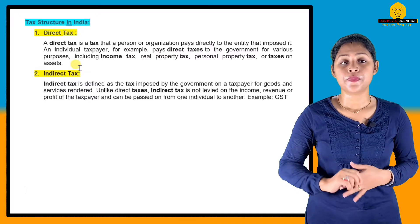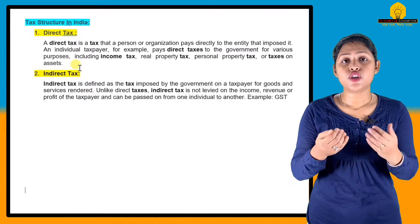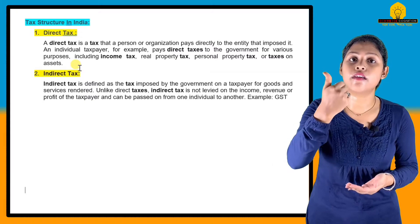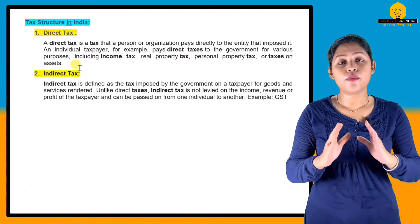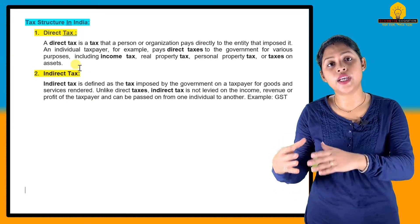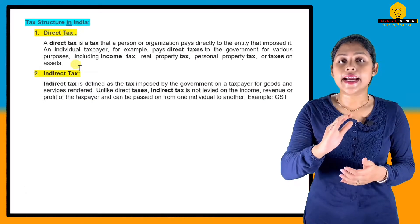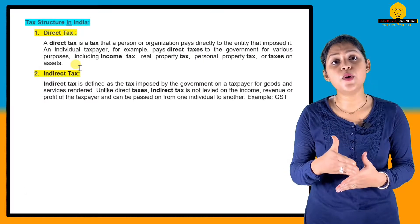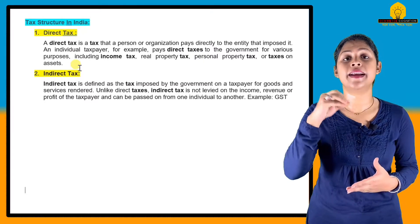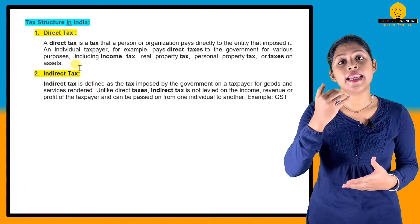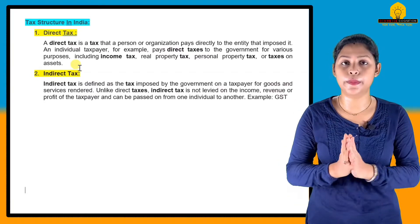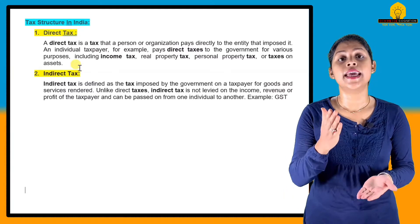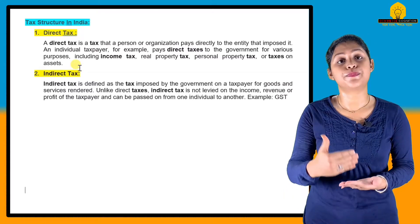This is what we call income tax. When an individual pays tax on their income directly to the government, it is a direct tax. Examples of direct tax include income tax, wealth tax, and property tax — all paid directly by the individual to the government.